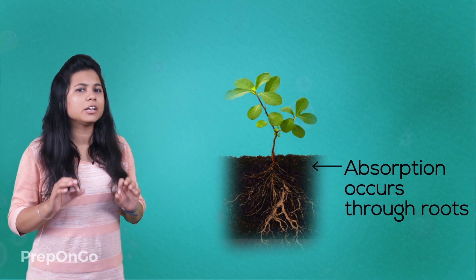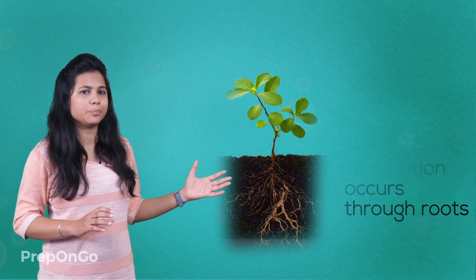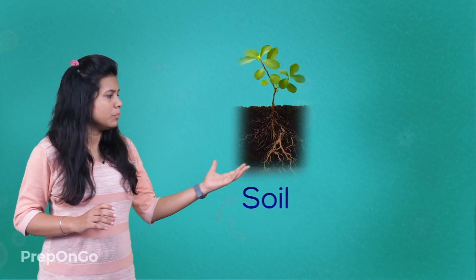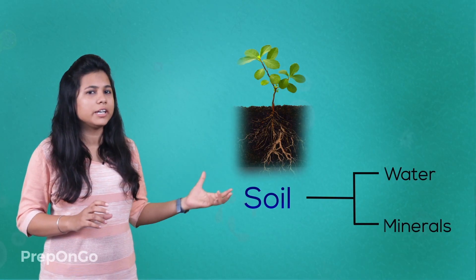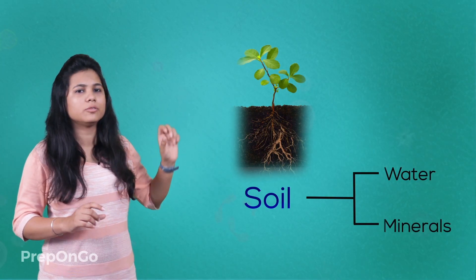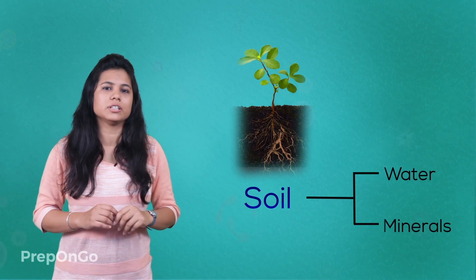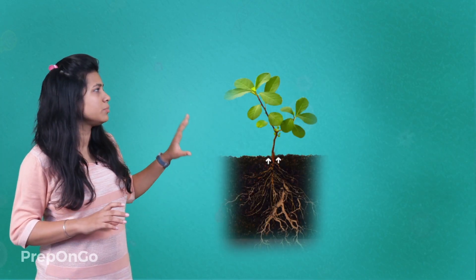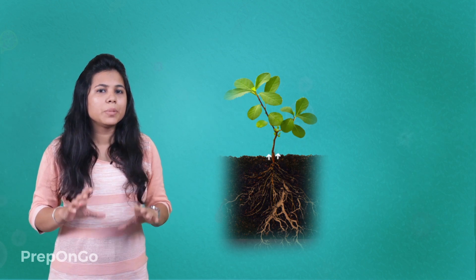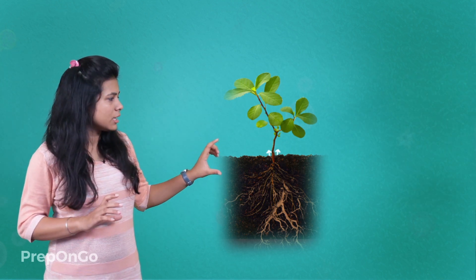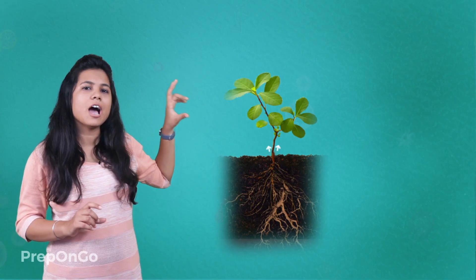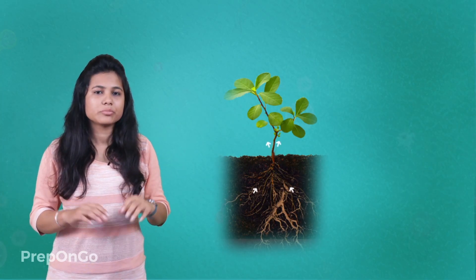The roots are in proper contact with the soil, which has water, minerals, and all the necessary contents the plant requires for photosynthesis. For small plants, the diffusion process is easy because the soil-contacting parts and the chlorophyll-contacting parts have less distance between them.